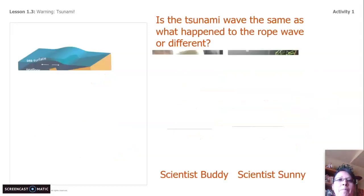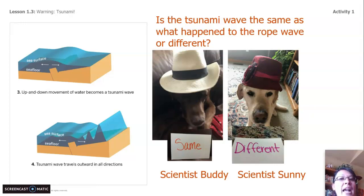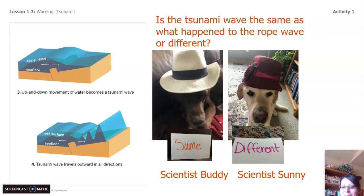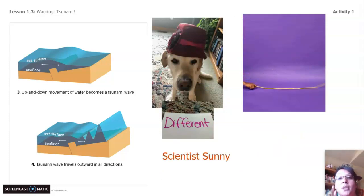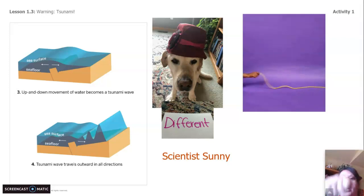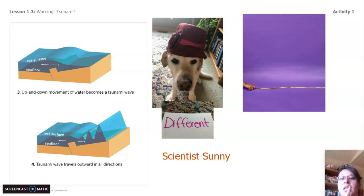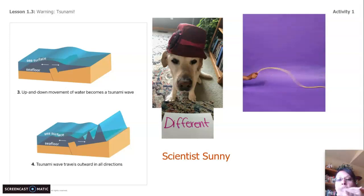I have a question for you: is the tsunami wave the same as the rope wave, or is it different? Scientist Buddy thinks it's the exact same. Scientist Sunny, however, says it's slightly different. Scientist Sunny is correct. The rope does move in an up and down motion — calm, jolt, calm, jolt. But if you notice the rope wave, it's only going away from the source in one direction. When you have a tsunami, it's jolted and the waves travel outward in all directions. That's how they're a little bit different.